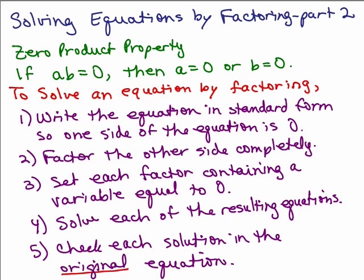Two, factor the other side completely, the side that does not contain the zero. Set each factor containing a variable equal to zero. Solve each of the resulting equations and check each of those solutions in the original equation.